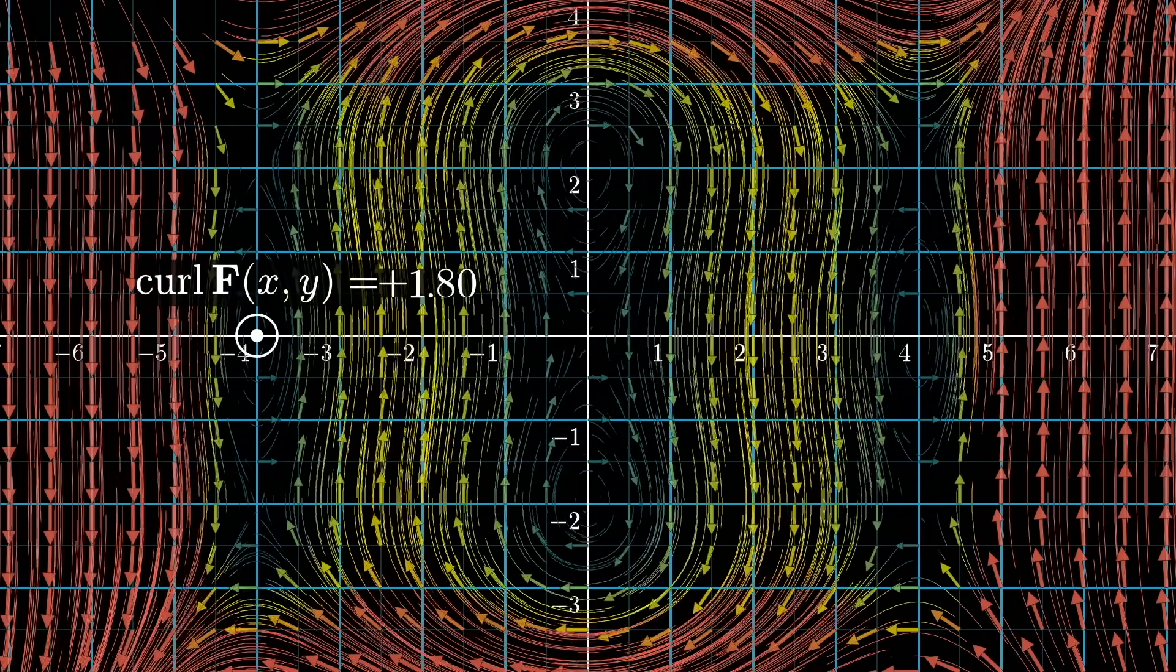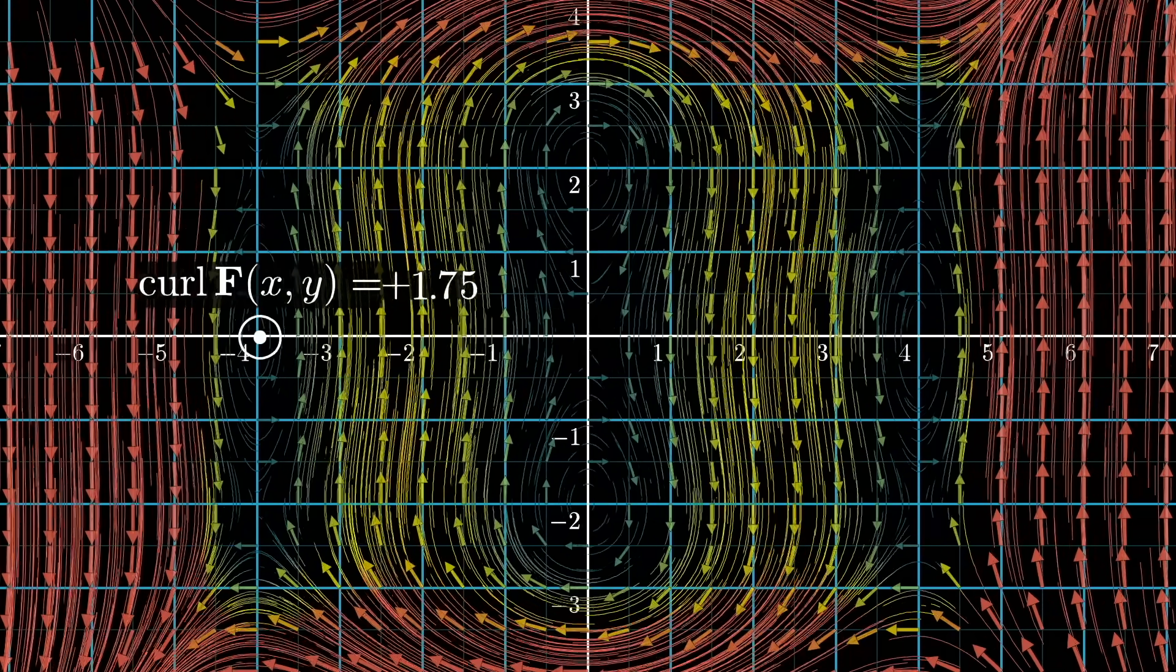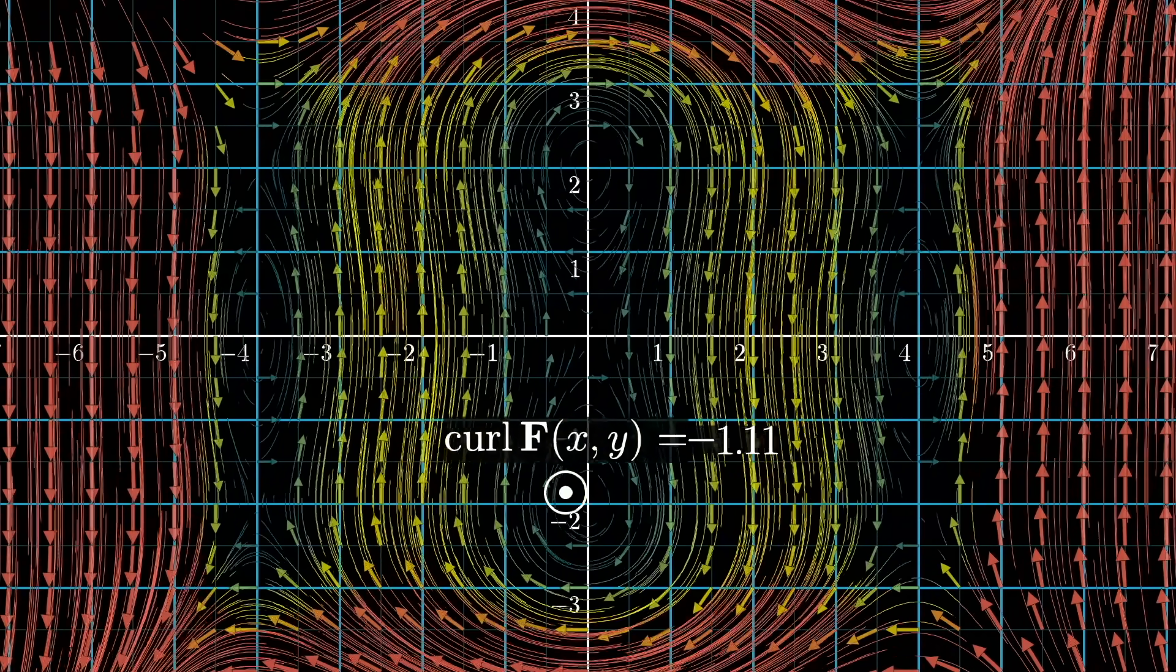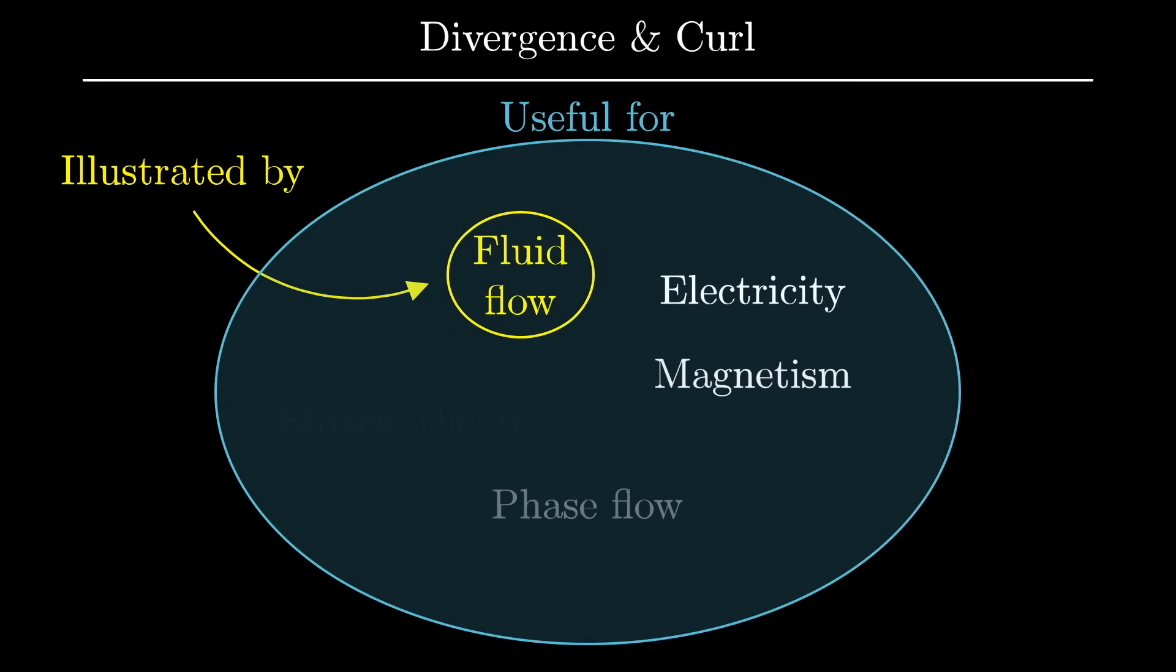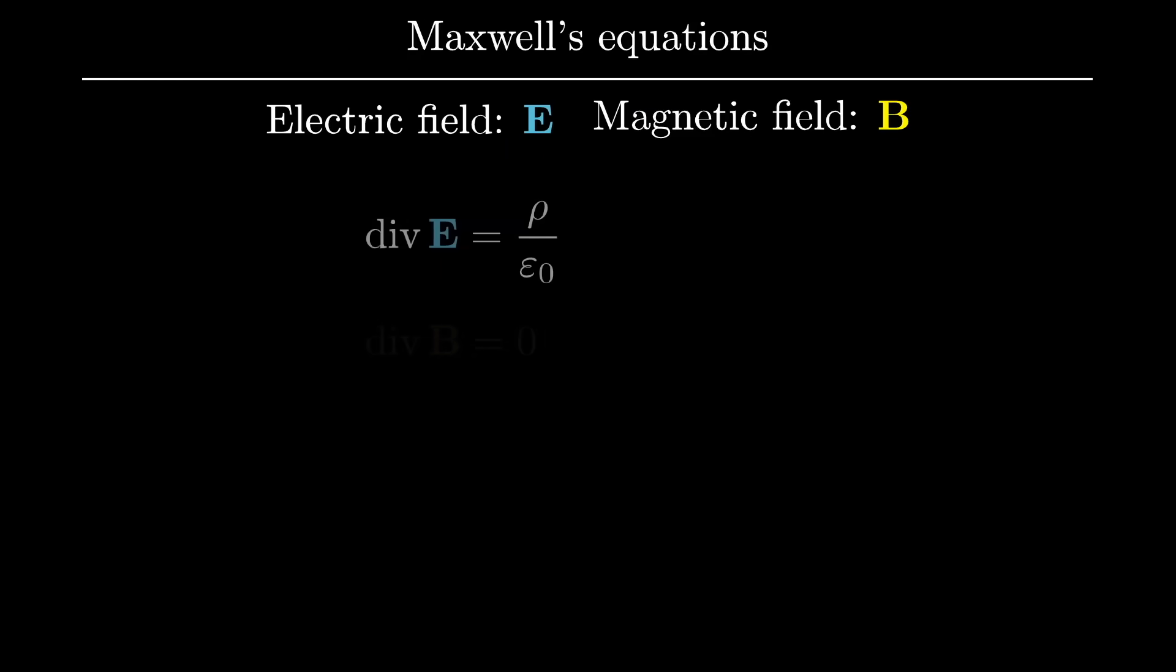As I said, even though these intuitions are given in the context of fluid flow, both of these ideas are significant for other sorts of vector fields. One very important example is how electricity and magnetism are described by four special equations. These are known as Maxwell's equations, and they're written in the language of divergence and curl.